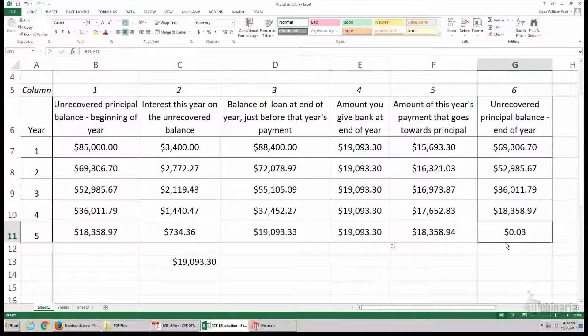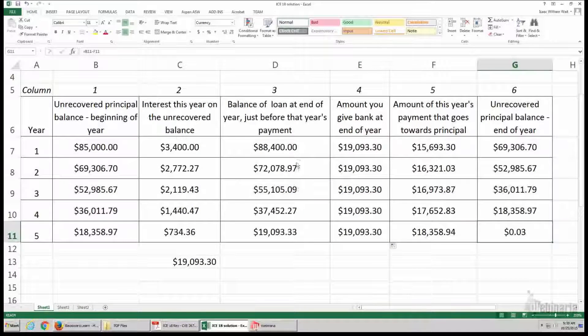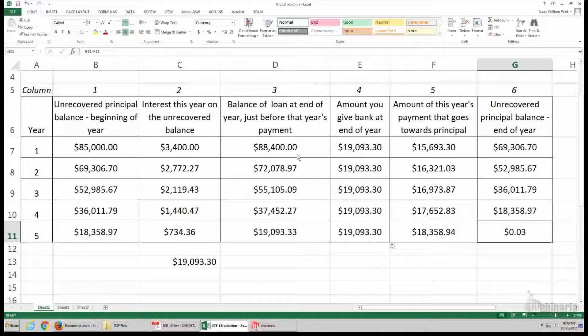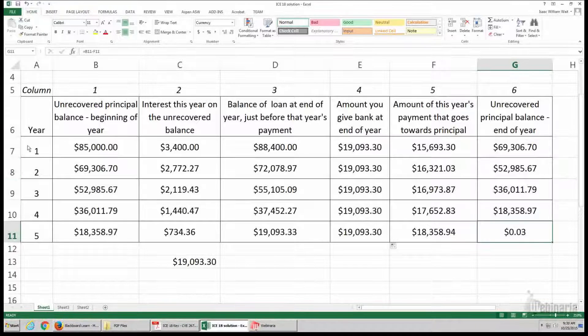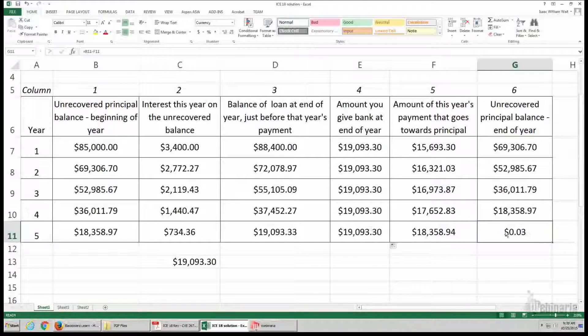You can see that there's still, it's not exactly zero, but that's because you can only pay to the nearest penny. And so over five years, if we paid any less than that, then we'd owe more. If we paid any more, then there's going to be an excess balance.